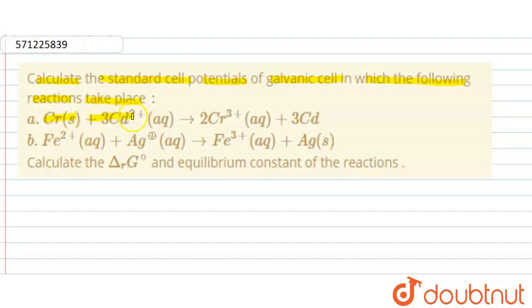Chromium solid plus 3 Cd2+ aqueous gives 2 Cr3+ aqueous plus 3 Cd. Fe2+ aqueous plus Ag gives Fe3+ aqueous plus Ag solid.